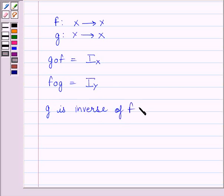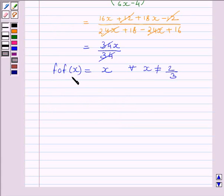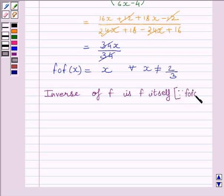Here we have to find the inverse of f itself, and f(f(x)) equals x, which is the identity function on x. So the inverse of f is f itself. This is because f of f(x) equals the identity function on x.